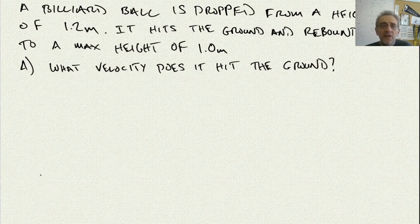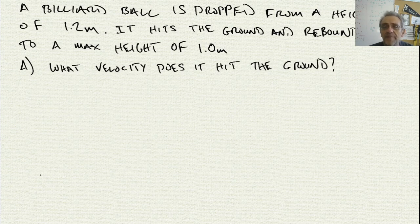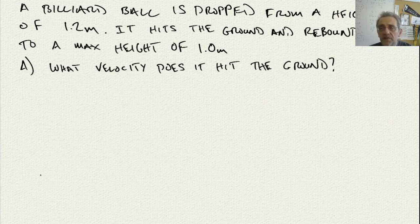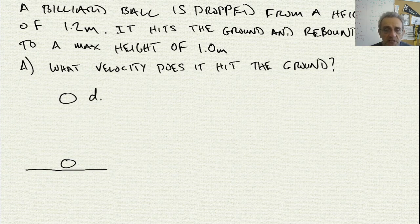So, here we have a new question. It says a billiard ball is dropped from a height of 1.2 meters, and it hits the ground and rebounds to a maximum height of 1 meter. Obviously, not as high as it was originally dropped from. What velocity does it hit the ground? So, let's start by drawing a picture of what's happening here. Here's the ball initially. Here's the ball finally.